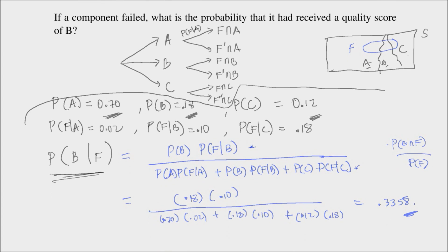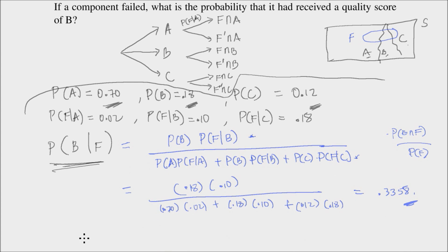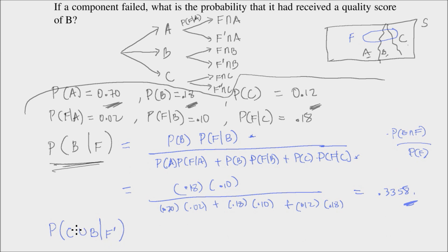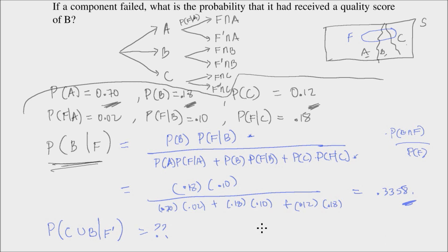Let me leave you with one exercise. Find the probability that a component is given a quality score of C or B given that it did not fail. So, given F complement, what is the probability of C union B? The answer you should get is 0.2751.